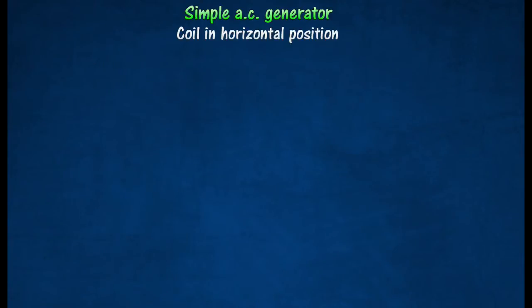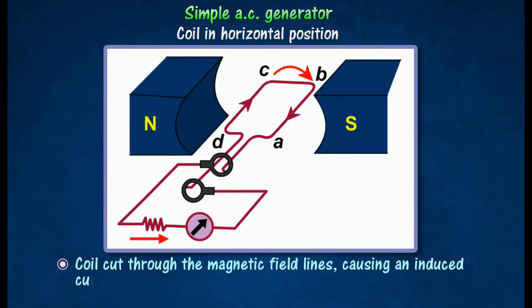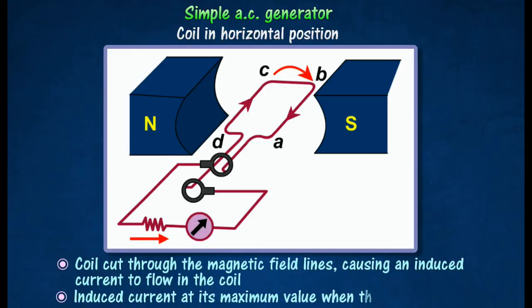As the coil moves past the vertical position, it will begin to cut through the magnetic field lines, causing an induced current to flow in the coil. The induced current will be at its maximum value when the coil is horizontal. The direction of the induced current is from D to C and from B to A.